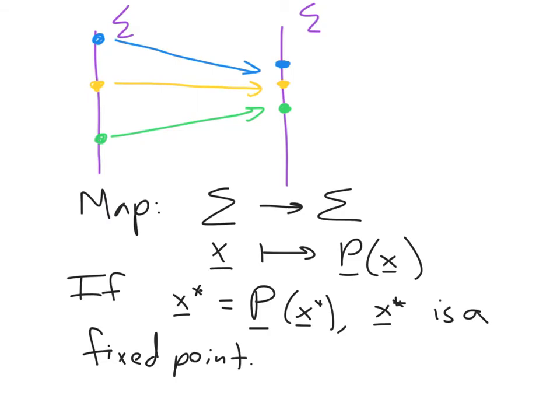So we have a map. It's a map from the curve sigma to the curve sigma. And it takes points on this curve to the Poincaré map of these points. And that mapping is we integrate forward in time by one rotation and see where we've returned to the curve.